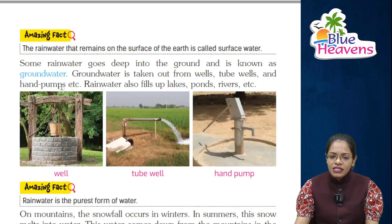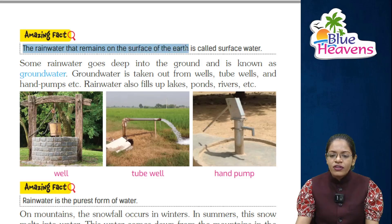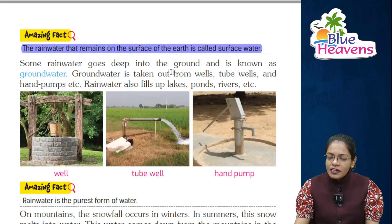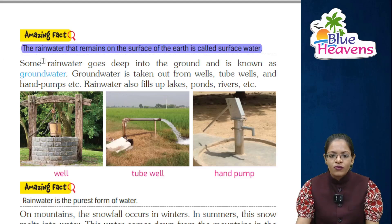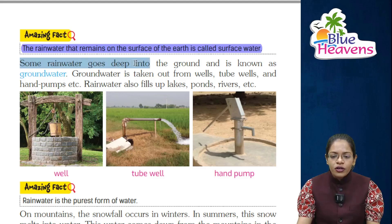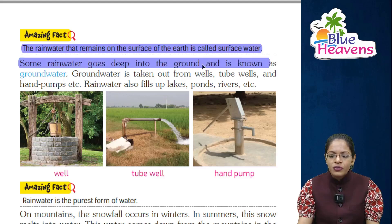Now let's see an amazing fact. The rain water that remains on the surface of the earth is called surface water. Some rain water goes deep into the ground and is known as ground water.